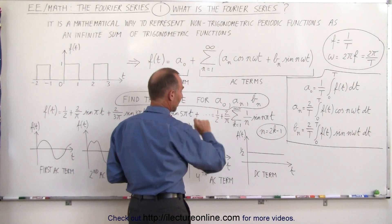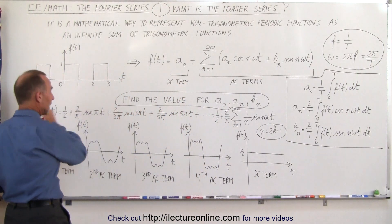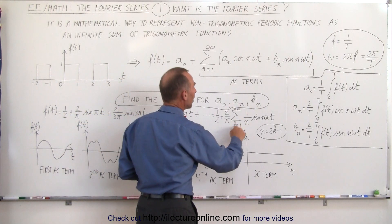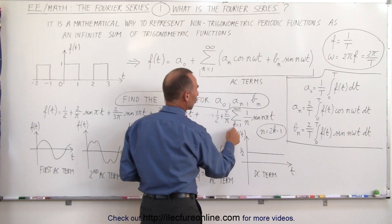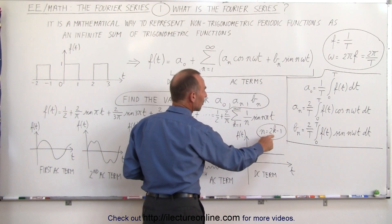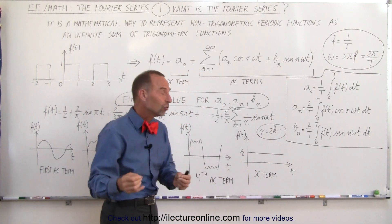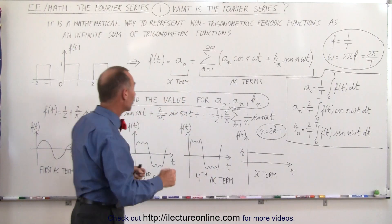That can then be written in a compact form like this. It's the constant term one-half plus two over pi, because we can factor out a two over pi from each of these terms, times the infinite sum of one over n times the sine of n pi t. Notice we're summing over k, where k can be related to n by n being two k minus one, which forces us to only have n being odd numbers.